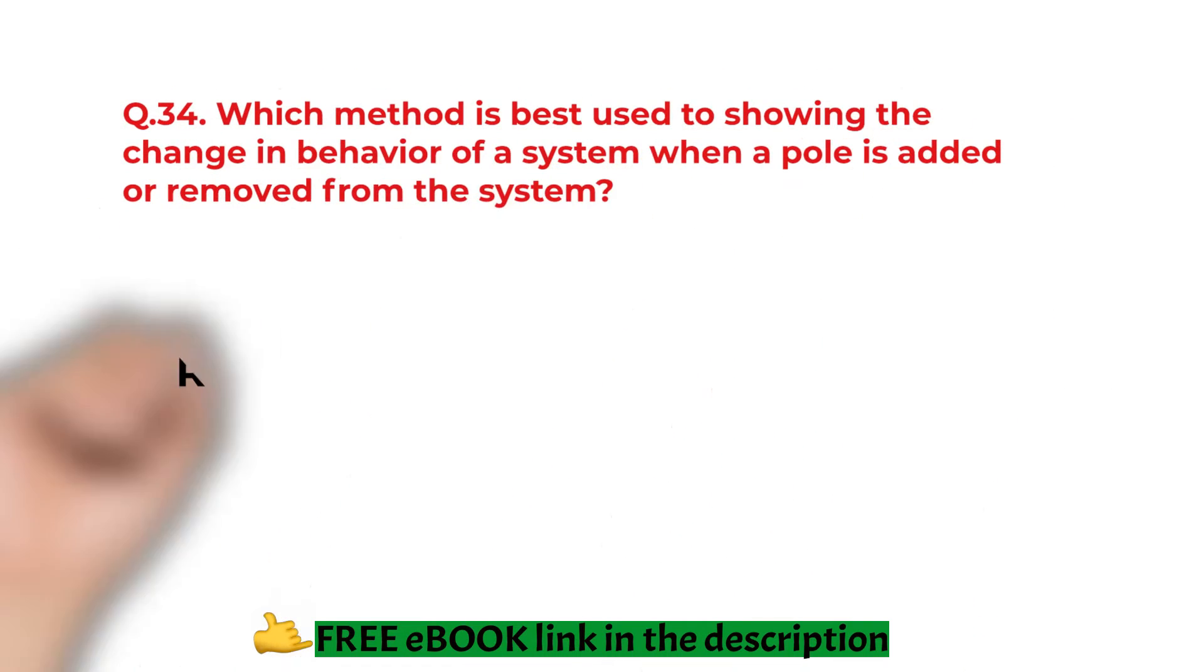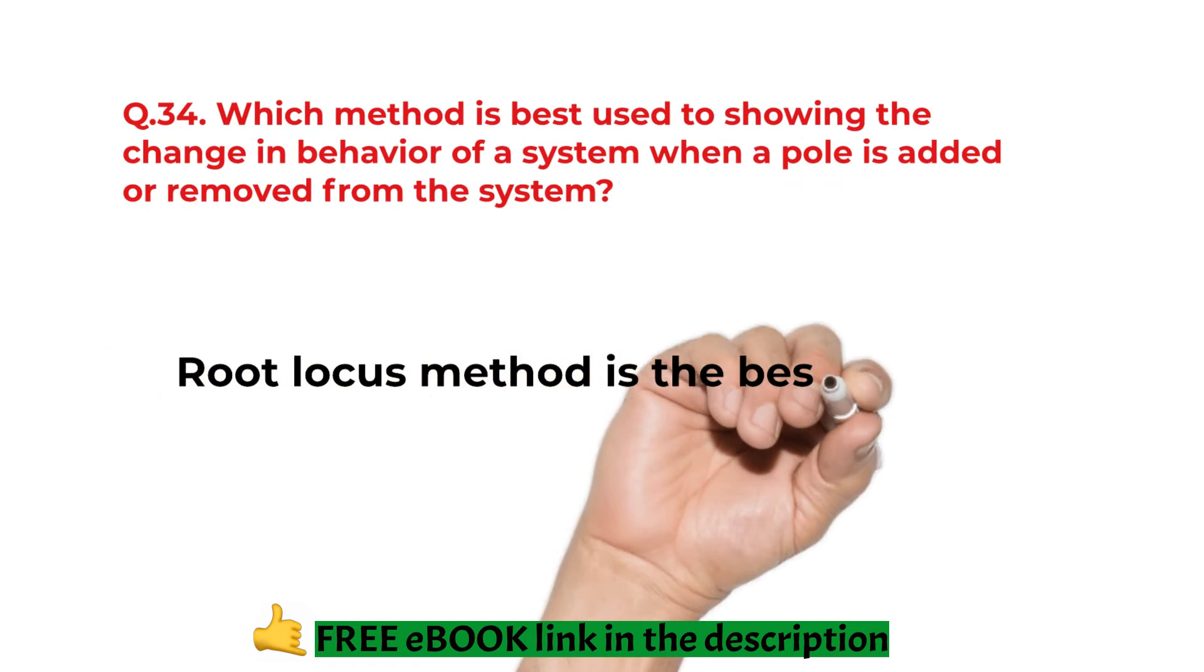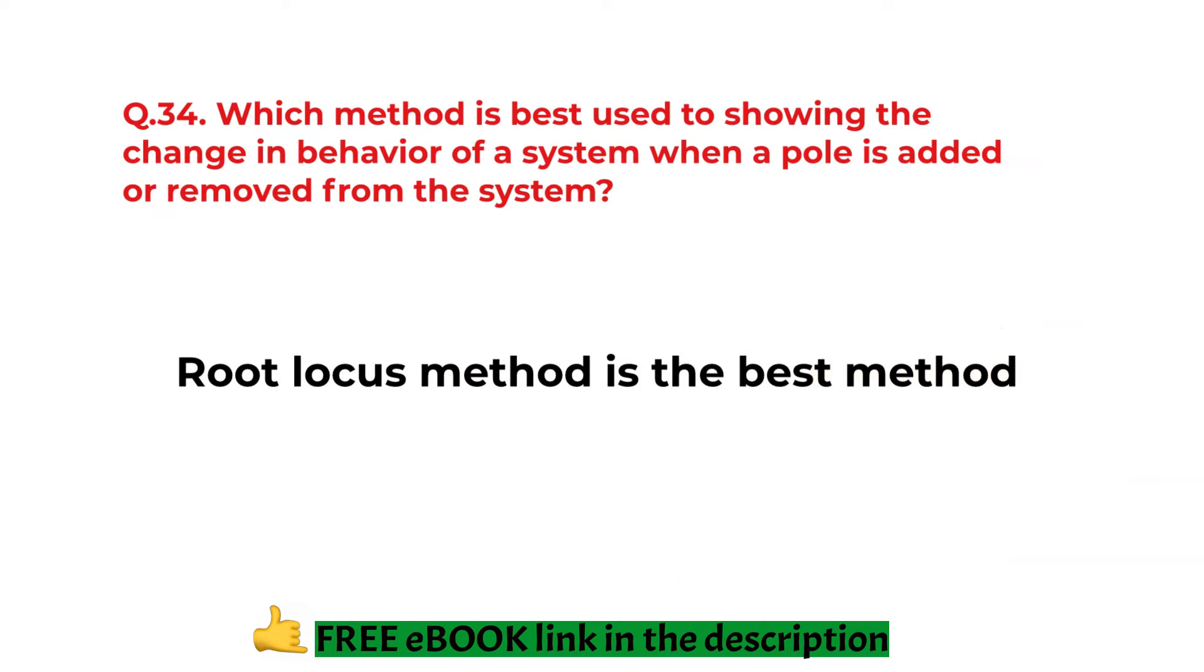Which method is used to showing the change in the behavior of the system when pole is added or removed? Root-locus method is the best method.